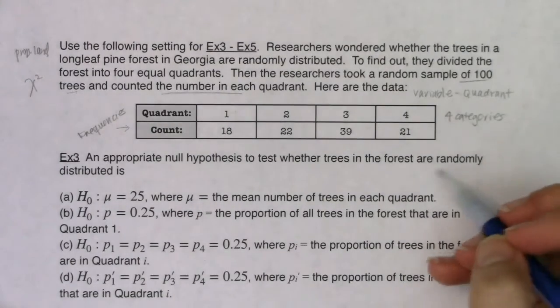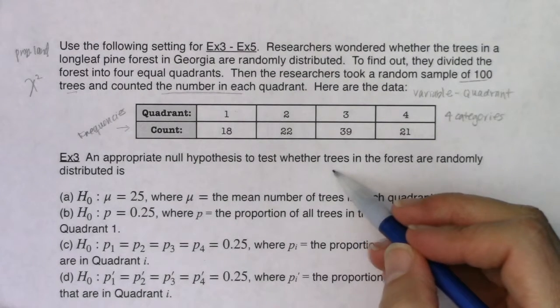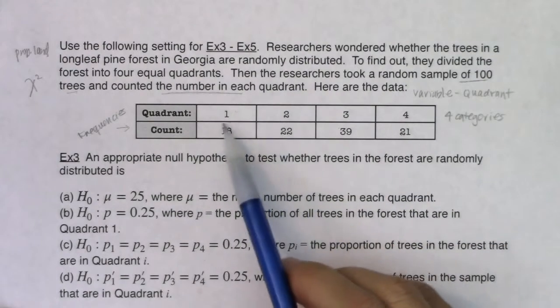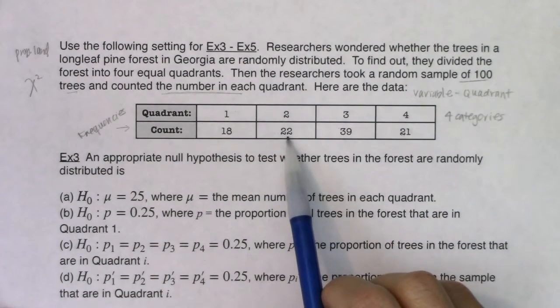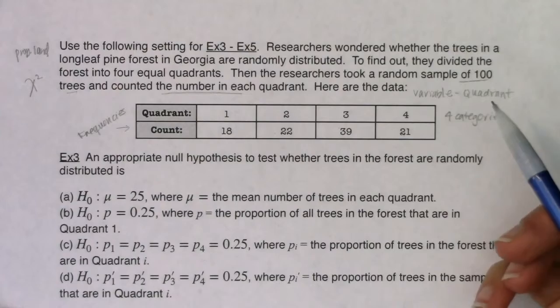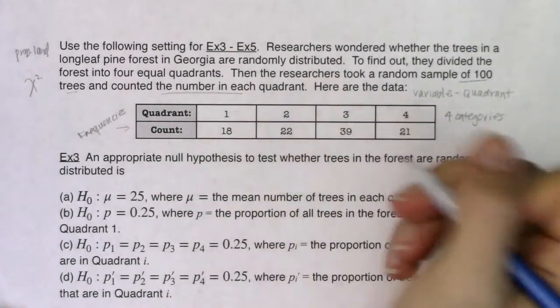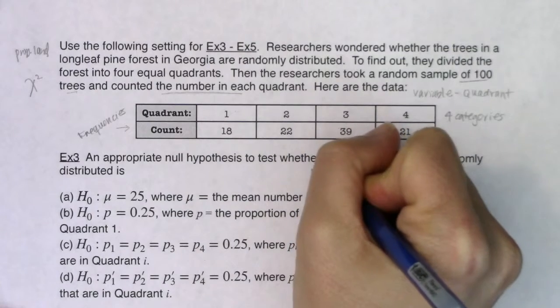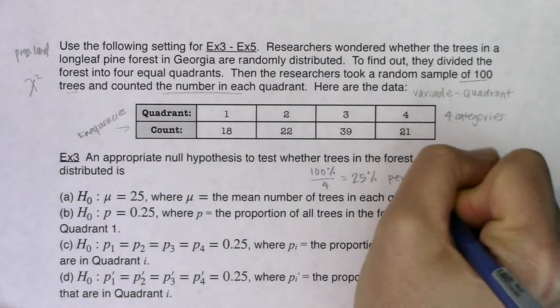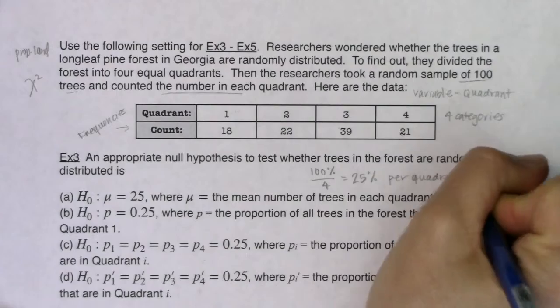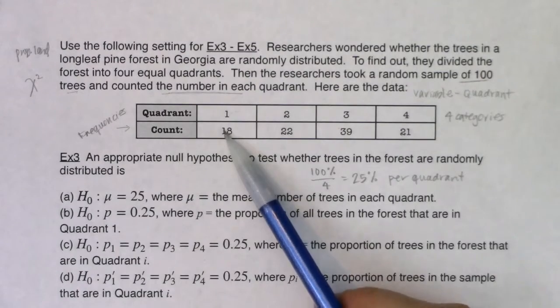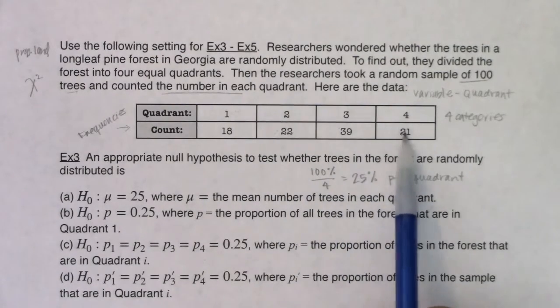Now, in order for these to be randomly distributed, if trees are randomly distributed, what that means is I should expect an equal number in each quadrant. Trees shouldn't be preferring quadrant one over quadrant two, or quadrant four over quadrant three, they should all be equally distributed. So if I've got that happening, if I want to think about my null proportion, I'm going to take 100% and divide it by the four categories and get 25% per quadrant. So again, if the trees are distributed randomly, then I should have 25% in quadrant one, 25% in quadrant two, quadrant three, and quadrant four.